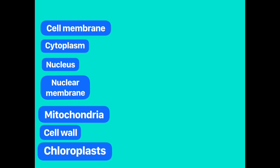Plant cells have all these parts. Animal cells, however, have all of these except for chloroplasts and cell walls.